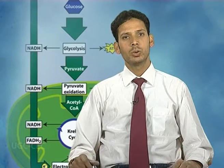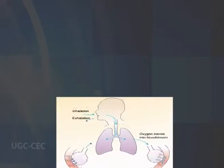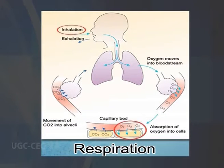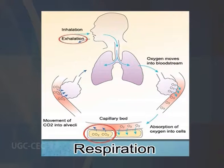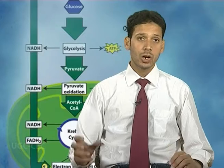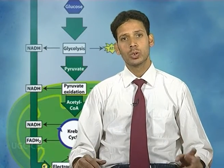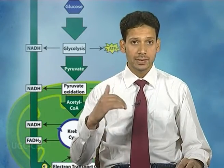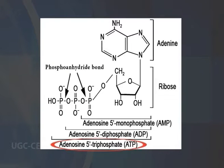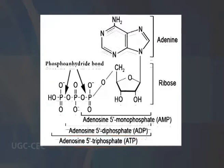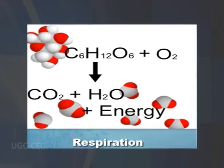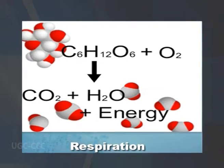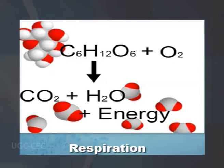Respiration, often confused with breathing, is defined as transport of oxygen from outside air to the cells within tissues and transport of carbon dioxide in the opposite direction. In contrast, the biochemical definition refers to cellular respiration as a set of metabolic reactions and processes that take place in the cells of organisms to convert biochemical energy from nutrients into adenosine triphosphate and then release waste products. The reactions involved in respiration are catabolic reactions, which break larger molecules into smaller ones, releasing energy as they break high energy bonds.